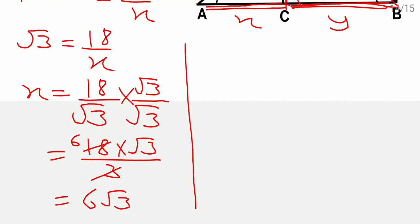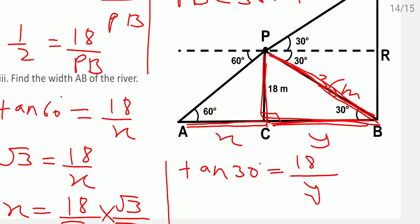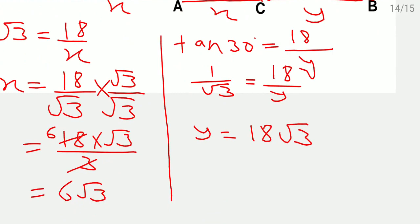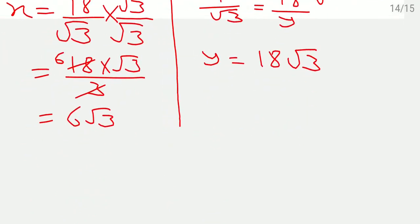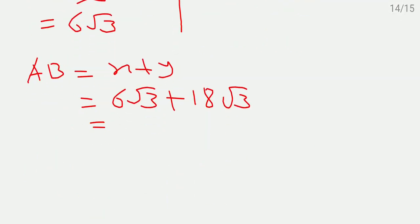Therefore AB equals X plus Y equals 6 root 3 plus 18 root 3, which equals 24 root 3 metres.